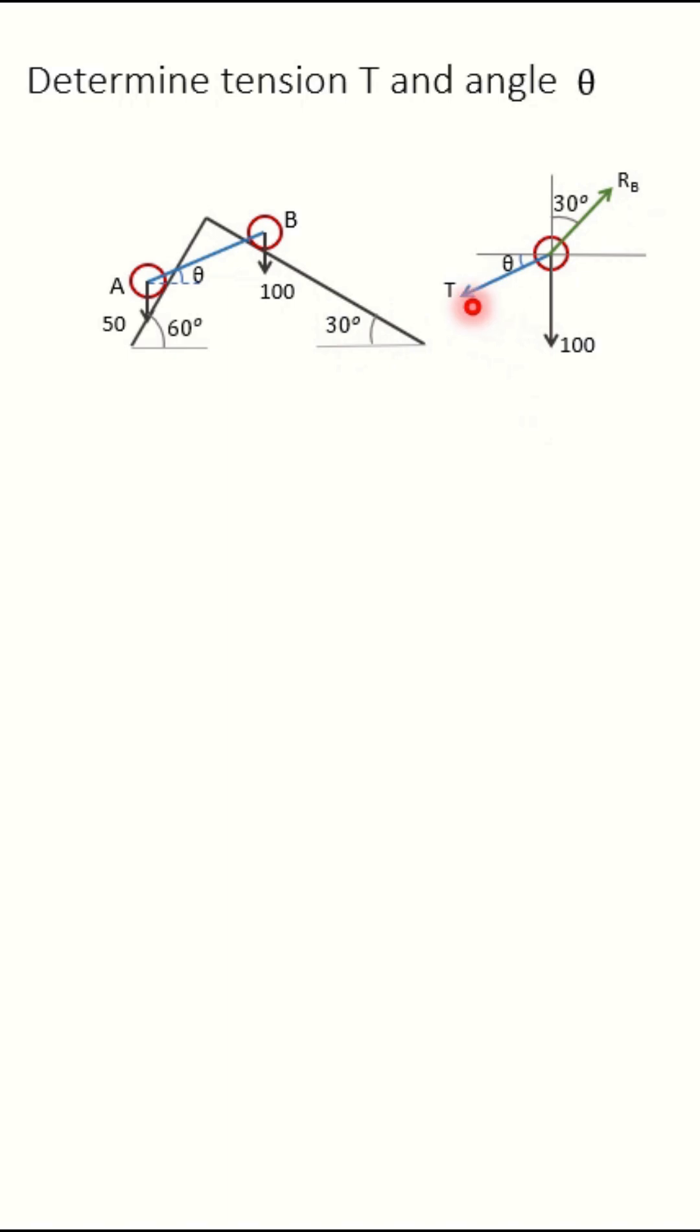Here there are three unknowns: tension T, theta, and RB. So somehow we have to determine this RB so that we can calculate T and theta using two equations of equilibrium. Sigma Fx equal to 0 and Sigma Fy equal to 0.